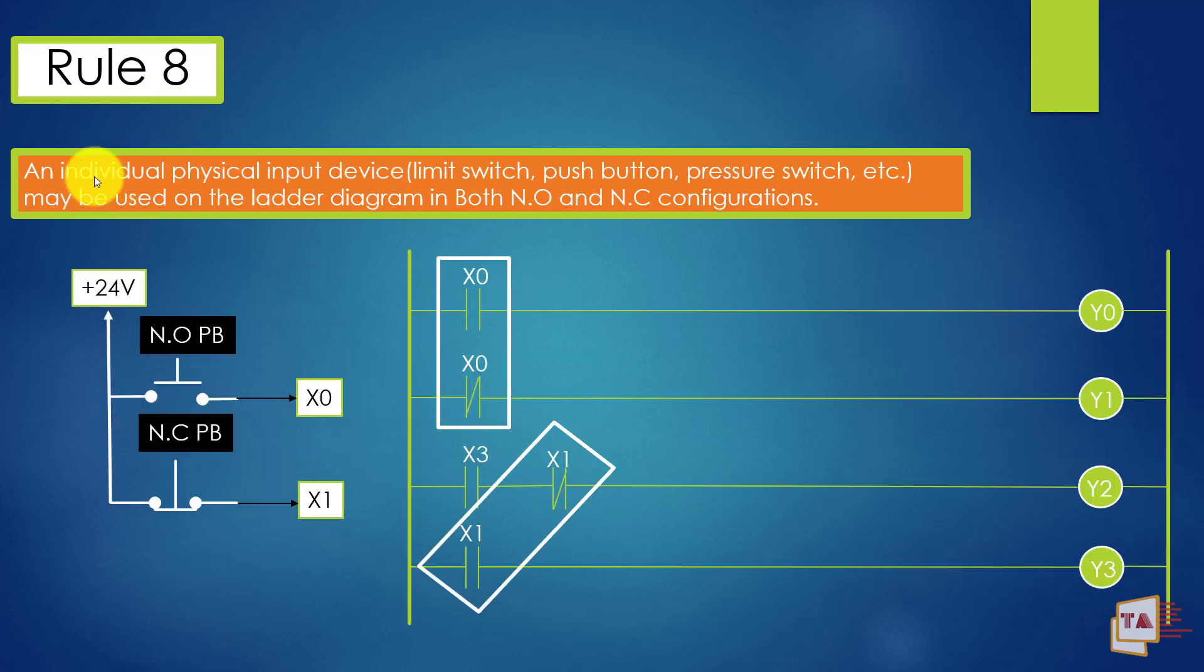See here next rule: an individual physical input device, limit switch, push button, pressure switch, etc., maybe used on the ladder diagram in both NO and NC configurations. This is a very important rule. This is a field wiring. We have normally open push button connection on X0. This is the normally open. Normally open means when you press the push button, then supply will come from the point. So X0 will get turned on. See, X0 is normally open in field, but in ladder diagram, you can use it in NO or NC. Both ways you can use, in both configuration, you can use the X0.